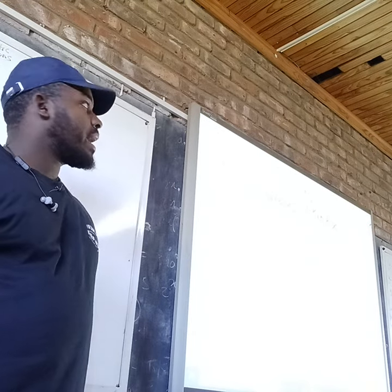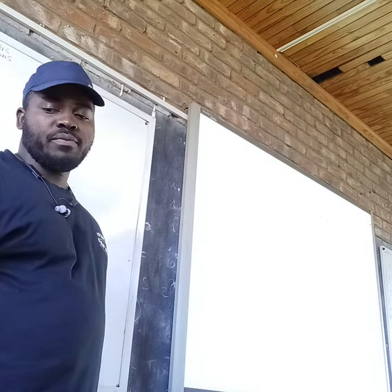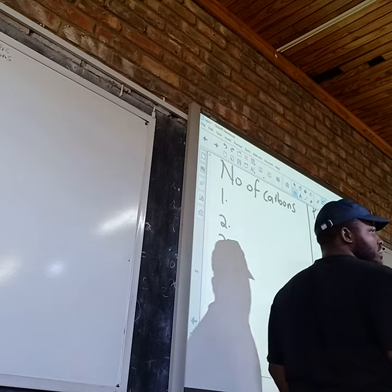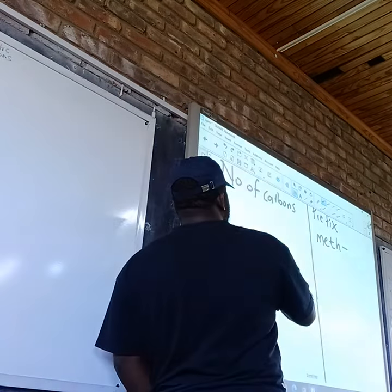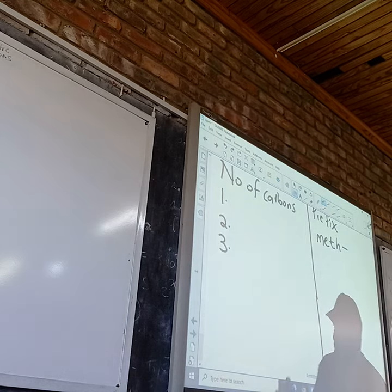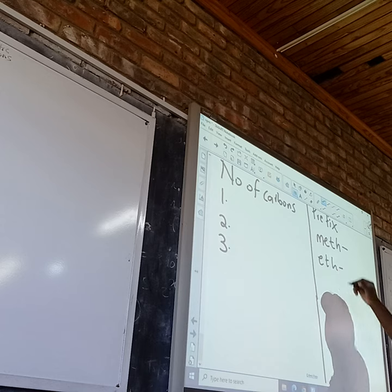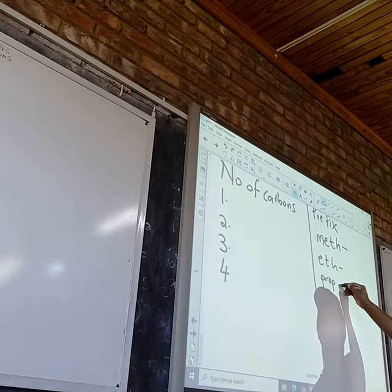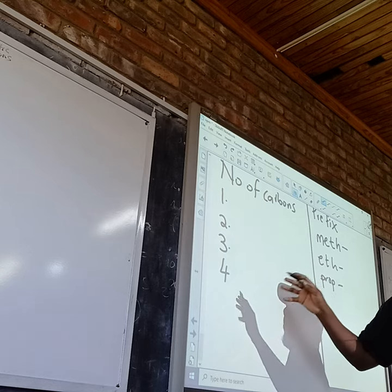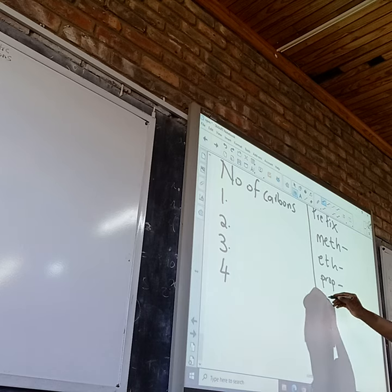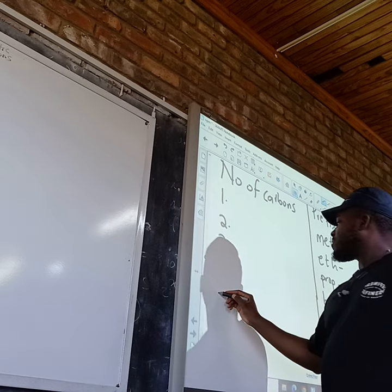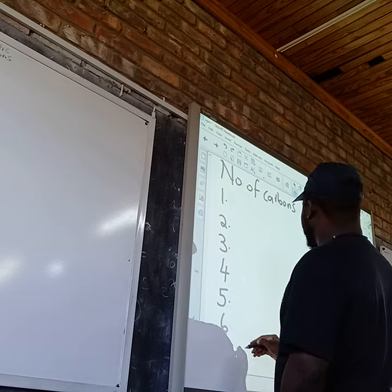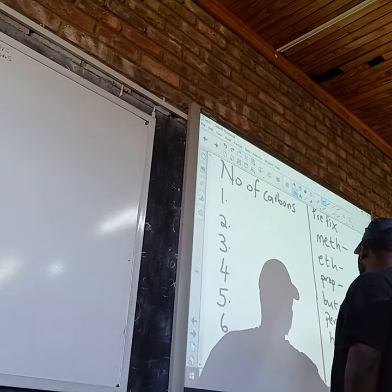If a molecule has one carbon, the prefix we use is meth-. The suffix will then come from its homologous series. If a molecule has two carbons, the prefix is eth-. If it has three carbons, the prefix is prop-. If the molecule has four carbons, the prefix is but-.